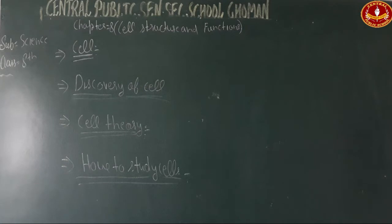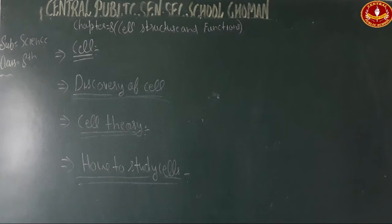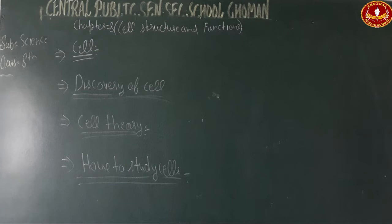We are going to study cells — what cells are and where they are found. For example, any tree, flower, rose, sunflower, coconut tree; many animals like dog, cat, man, human, cow, horse, and all birds. All these organisms are made by cells.